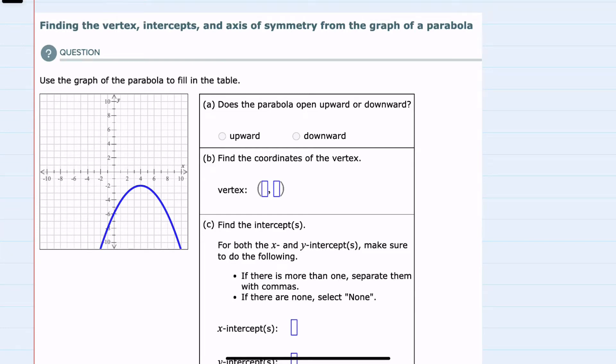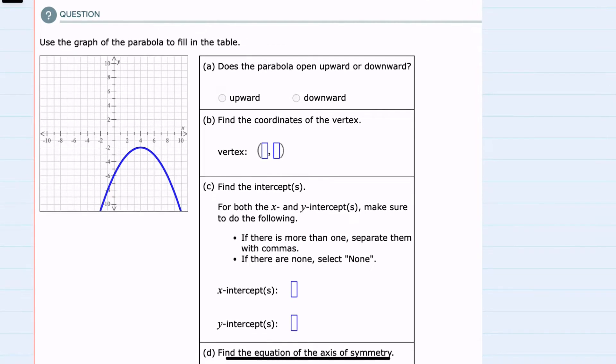In this video I'll be helping you with the ALEKS problem type called finding the vertex, intercepts, and axis of symmetry from the graph of a parabola. We're given the graph here of a parabola and asked to fill in the table. Our first question: does the parabola open upward or downward?